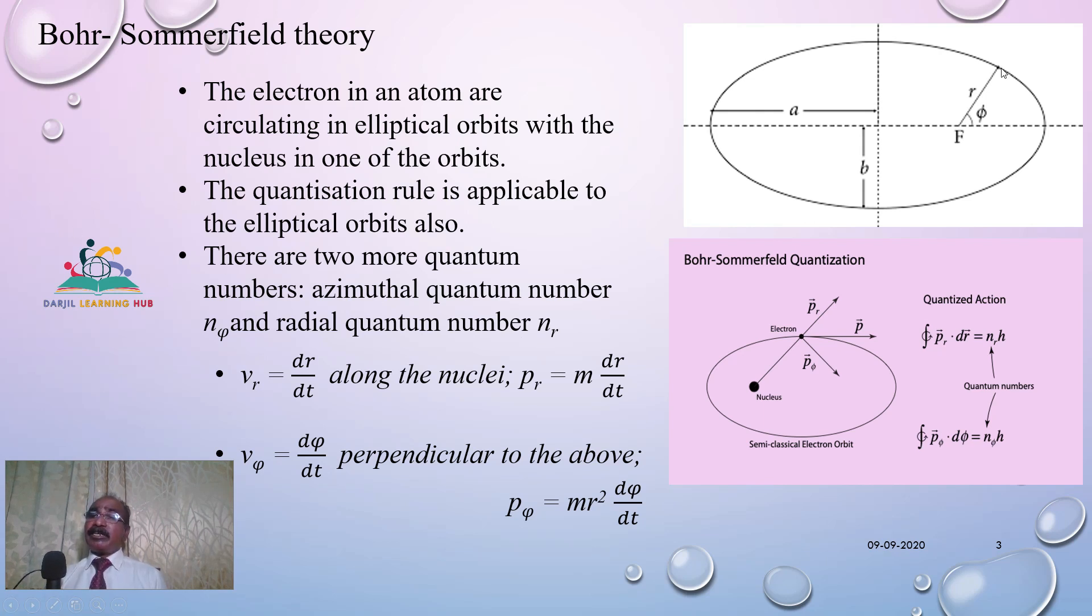In the electron in the elliptical orbit, there is a radial velocity represented as v_r equal to dr/dt. Then there is a radial linear momentum that will be equal to m times dr/dt, that is p_r. Similarly, it will have an angular velocity v_φ equal to dφ/dt, which is perpendicular to the above. And the angular linear momentum p_φ will be equal to mr² times dφ/dt, which will be perpendicular to p_r.